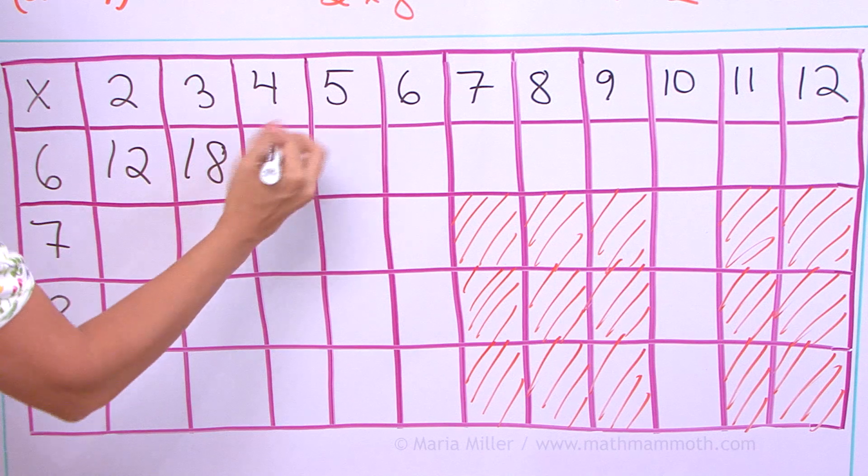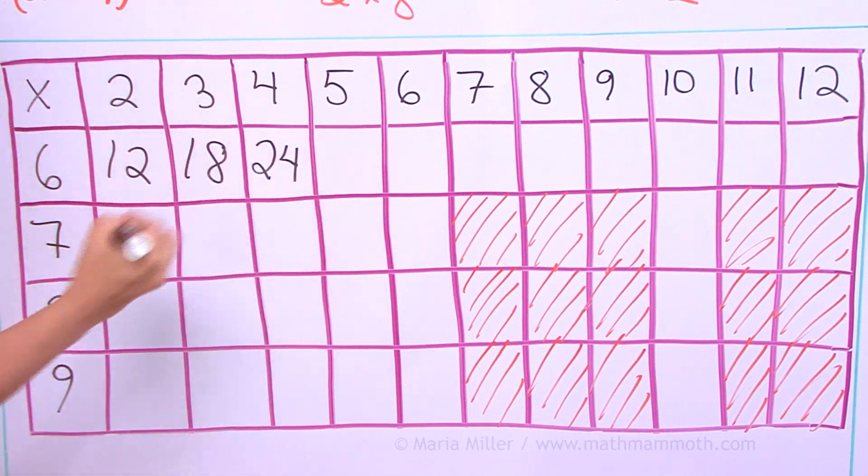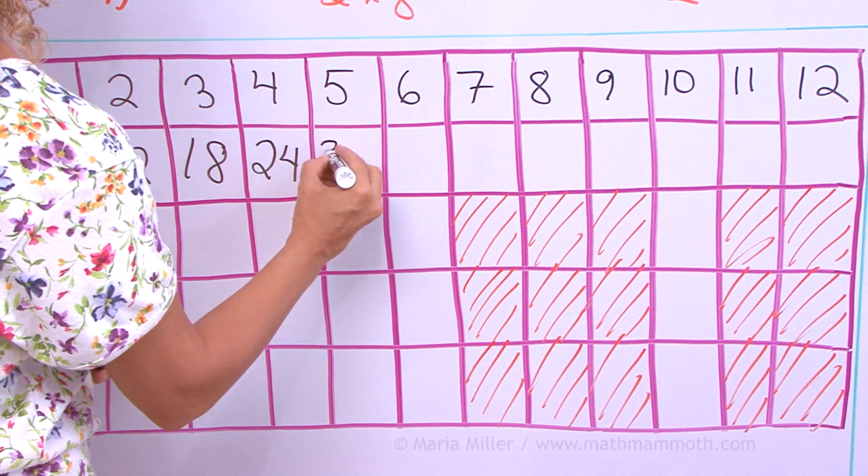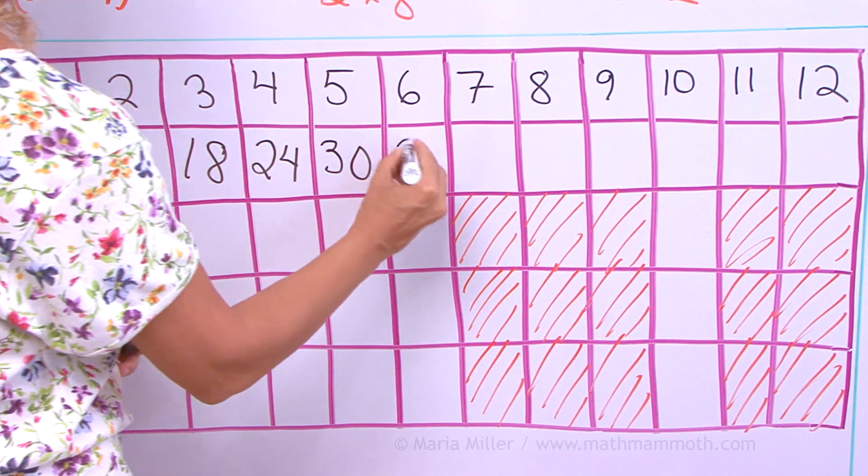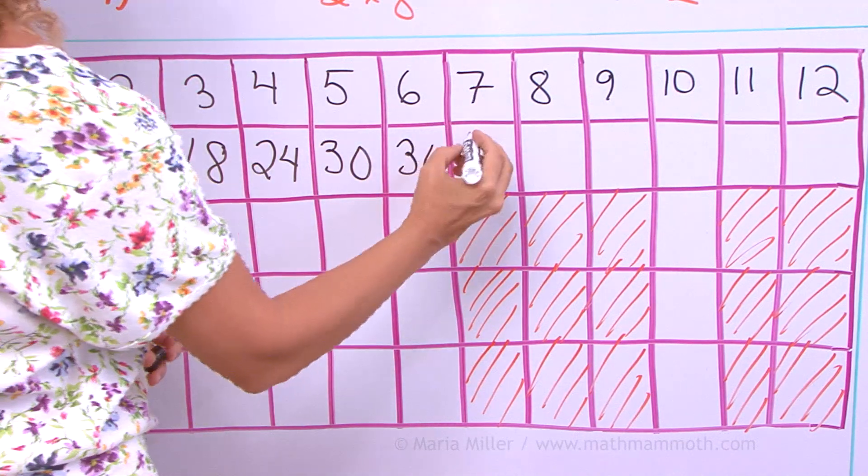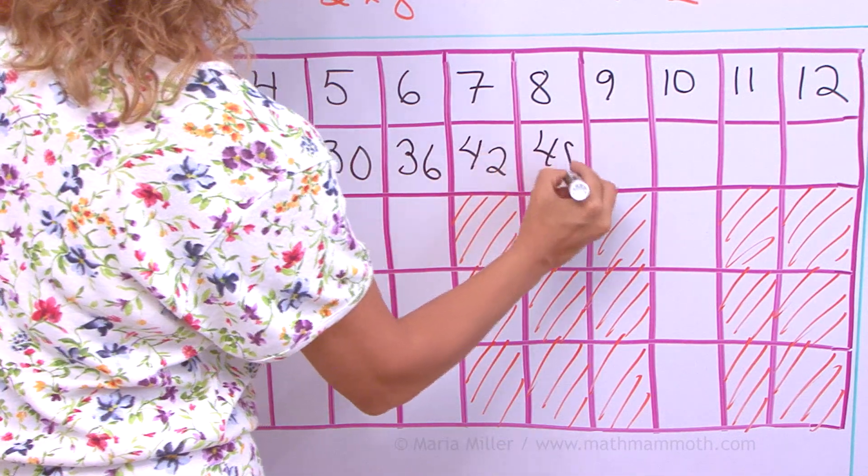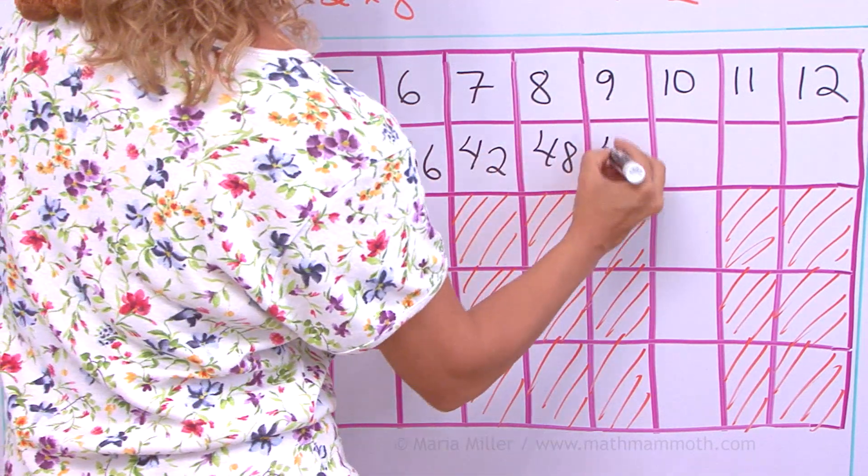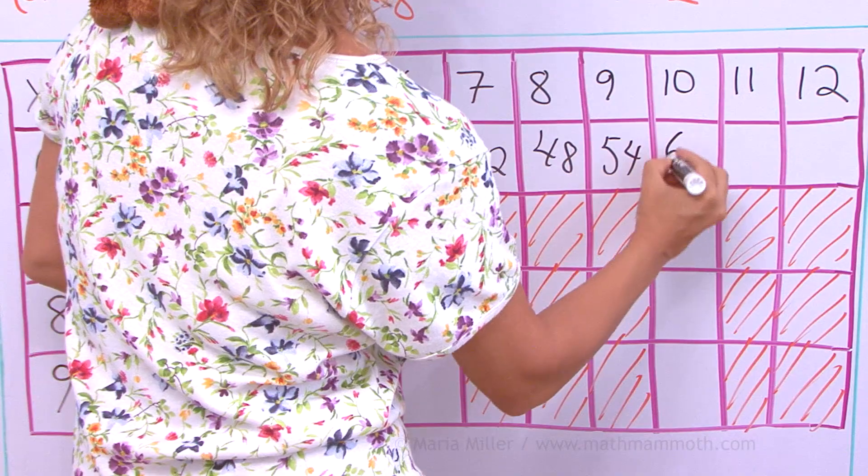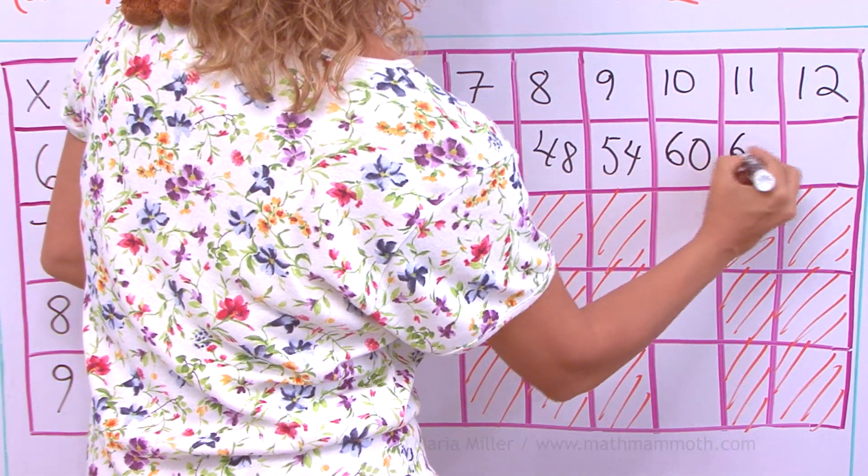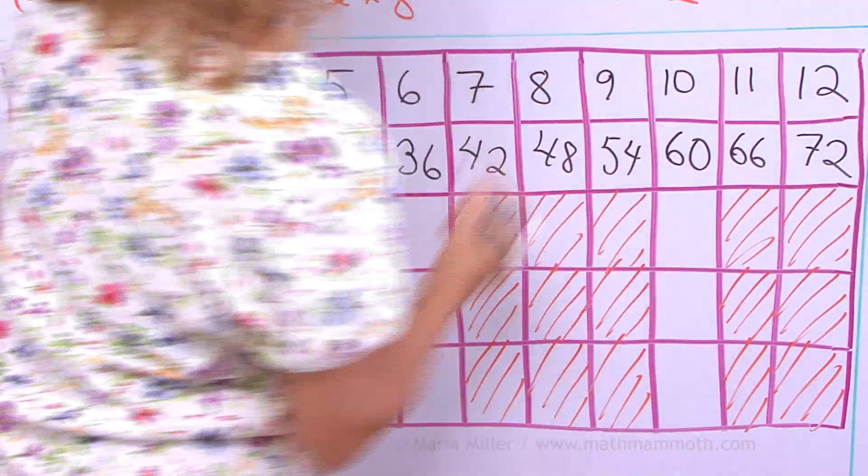And the skip counting pattern by 6s goes here. So I get 24 plus 6 is 30. Plus 6, 36. And then 42, 48, 54, 60, 66, 72.